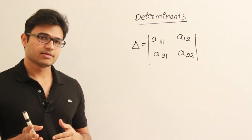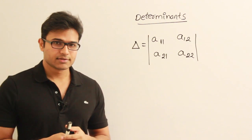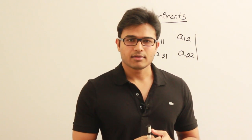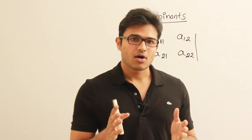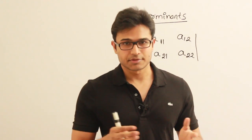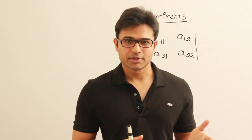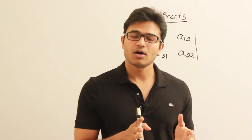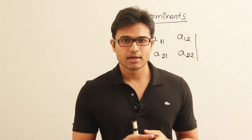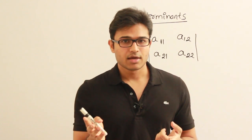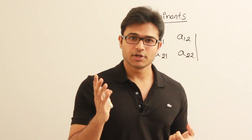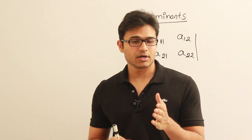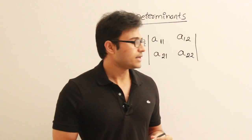Generally, a determinant and a matrix are actually different. A matrix is an array of rows or columns — an arrangement of numbers that doesn't carry any single numerical value. But a determinant is also an arrangement of numbers in a matrix-like form, except that all these numbers together produce a numerical value. So a determinant is different from a matrix in that a determinant has a value associated with it — you can ask 'what is the value of this determinant?' but you cannot ask that about a matrix.